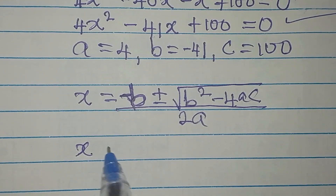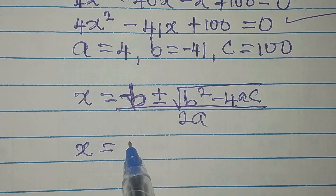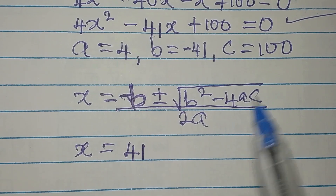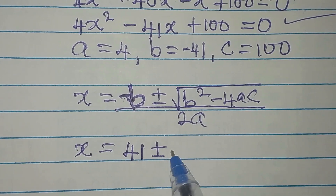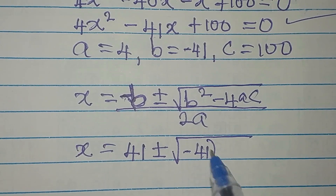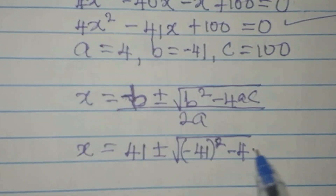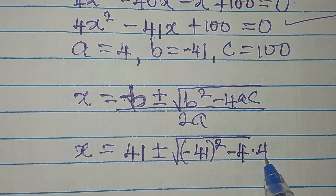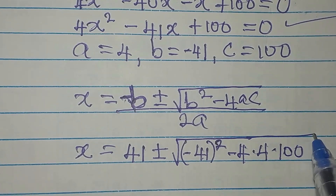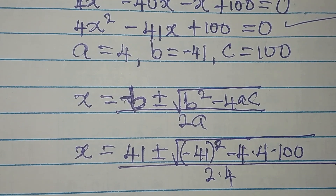Now we substitute the values. In place of minus b we get positive 41, because negative times negative is positive. Then plus or minus the square root of: b squared is (minus 41) squared, minus 4 times a which is 4, times c which is 100. All of this is divided by 2 times 4.